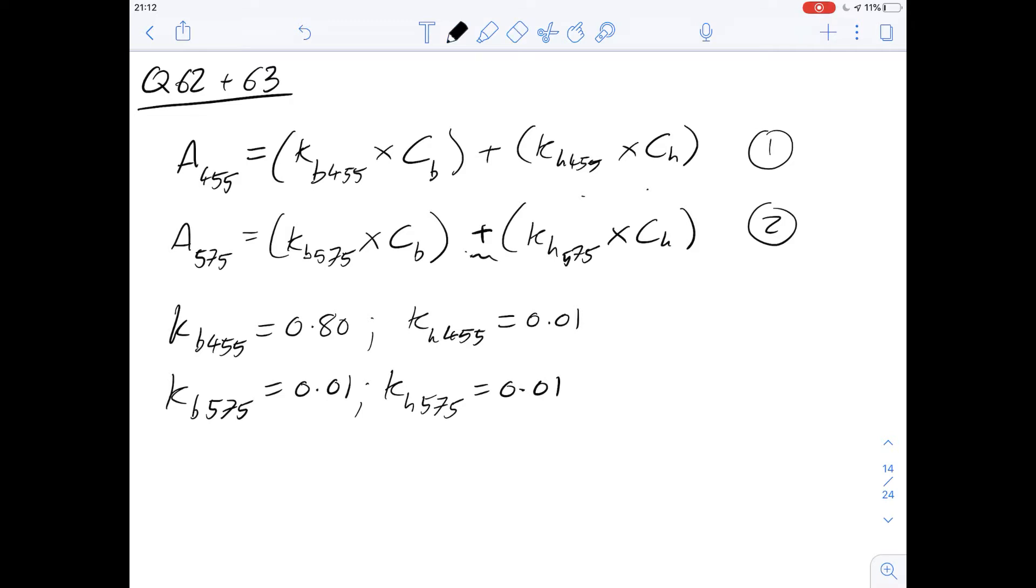So question 62 says for A_455 to equal A_575, what would we have to do? Before we go through all the answers, I think it's probably worth just noticing that this is going to be 80 times this, but these two are equal. So that means that the value of these two brackets are already the same.